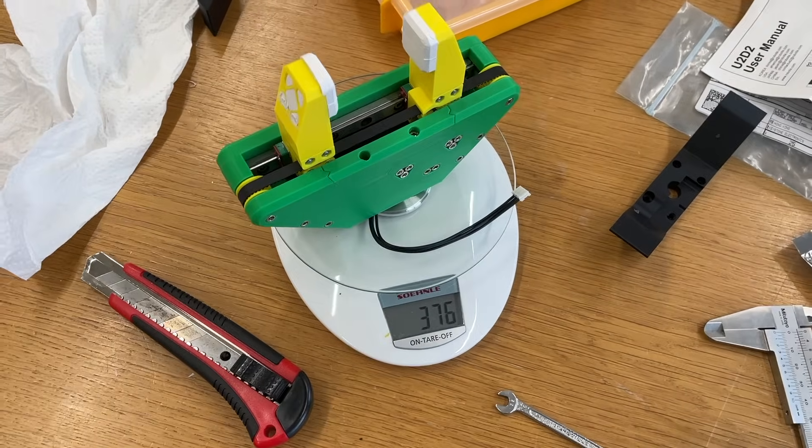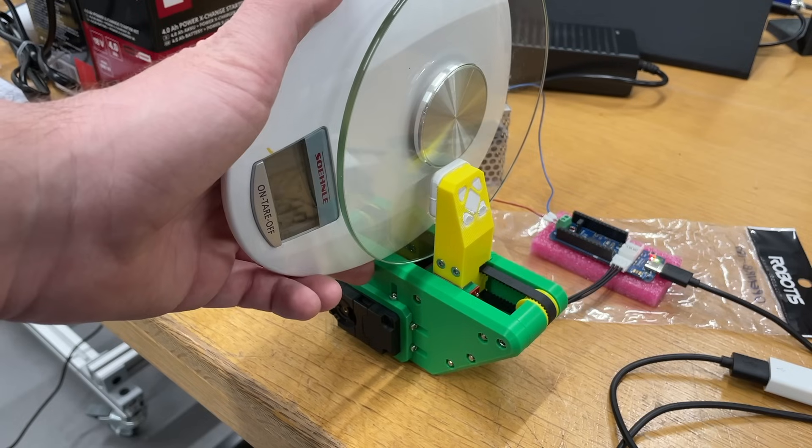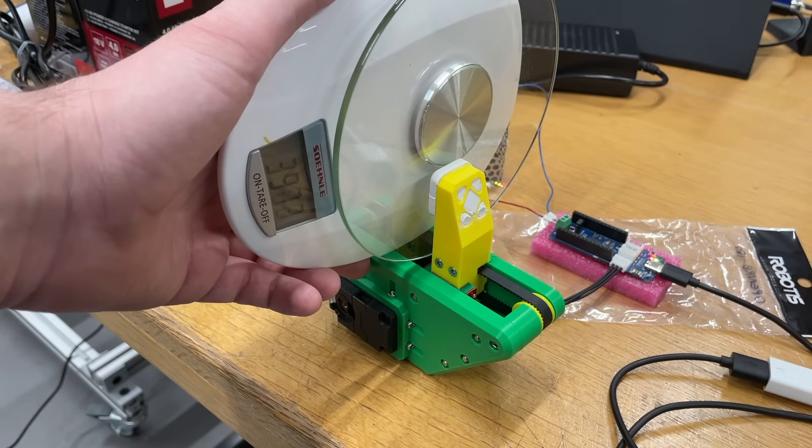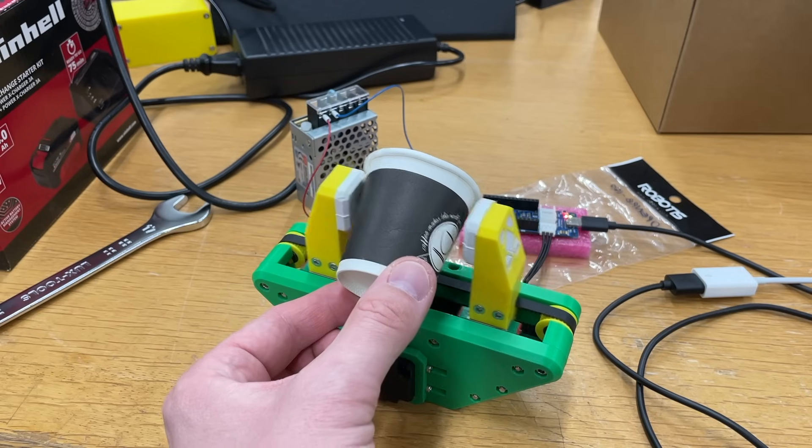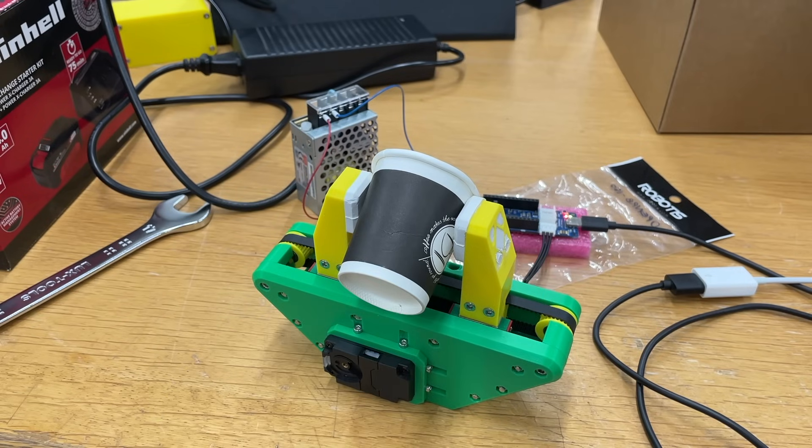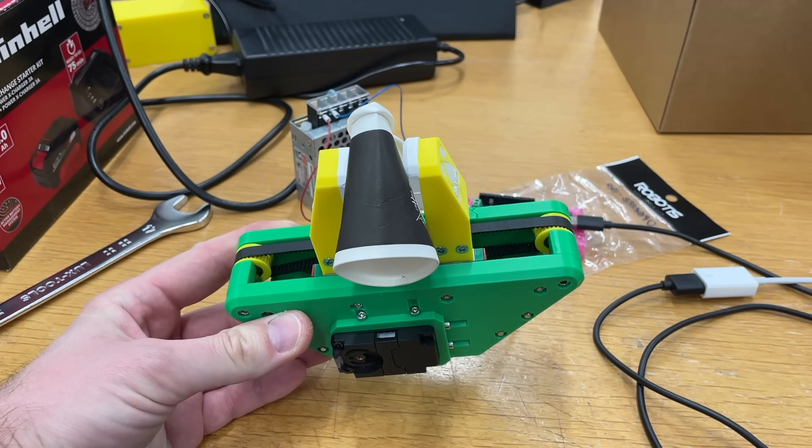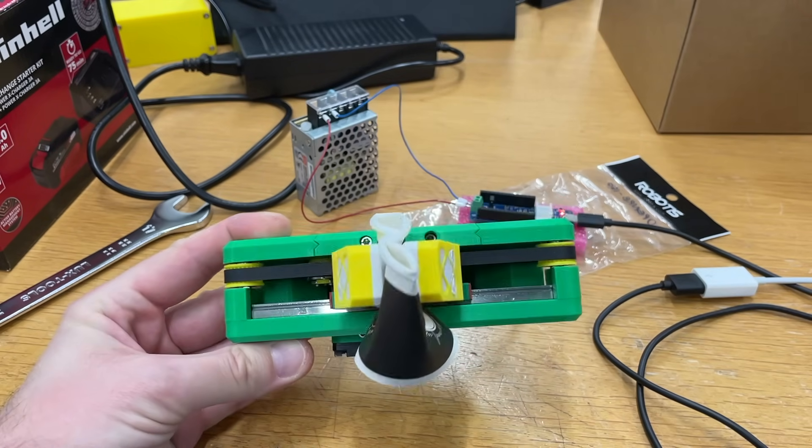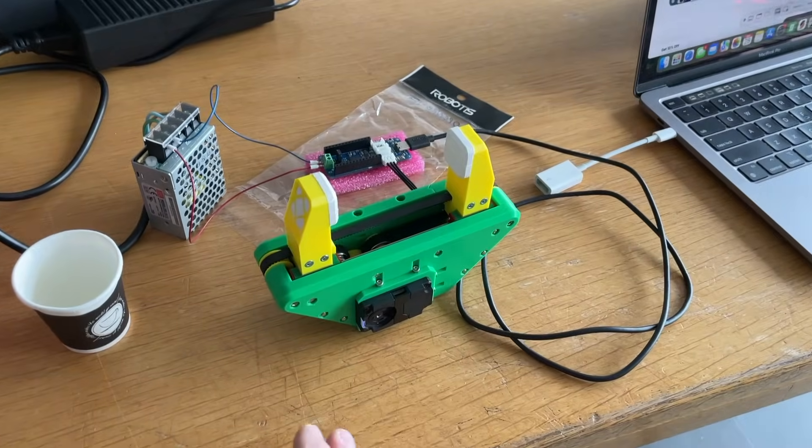The gripper weight is 377 grams and the maximum gripping force is around 4 kilograms. I think this 4 kilogram gripping force at 377 gram weight are quite respectable values. Let me show you how it works.